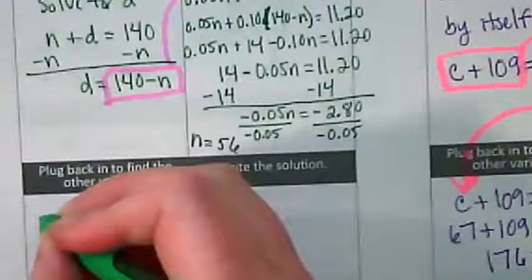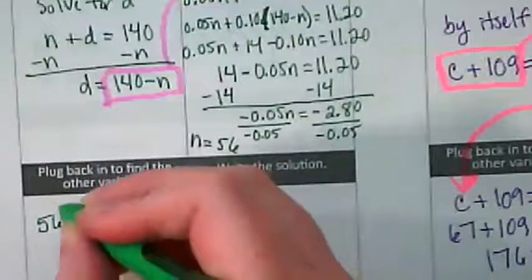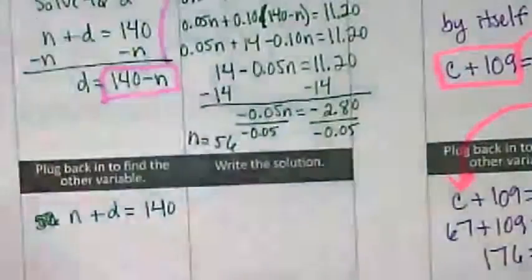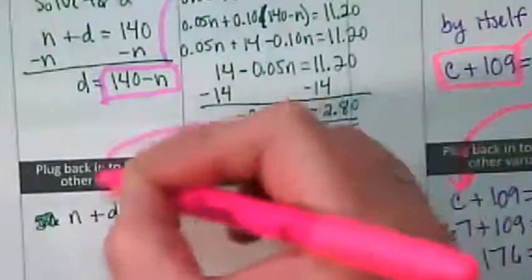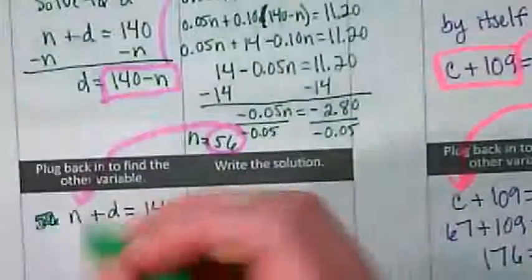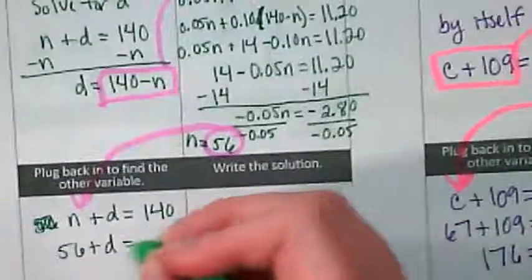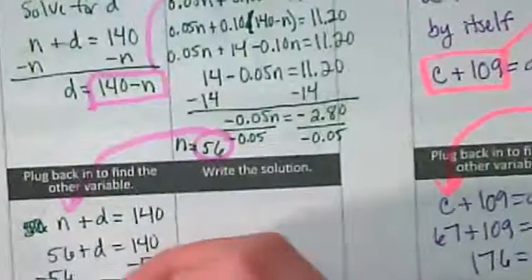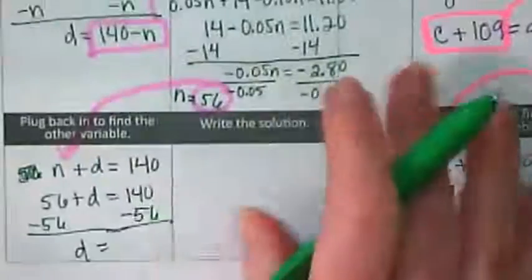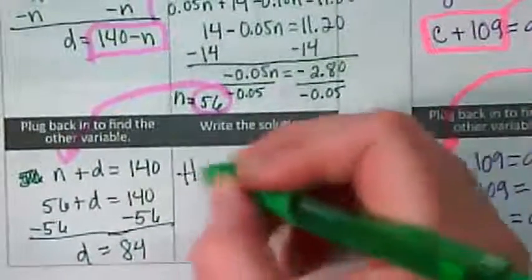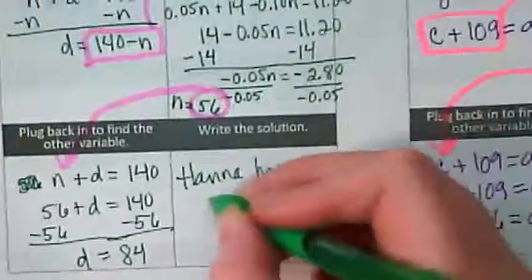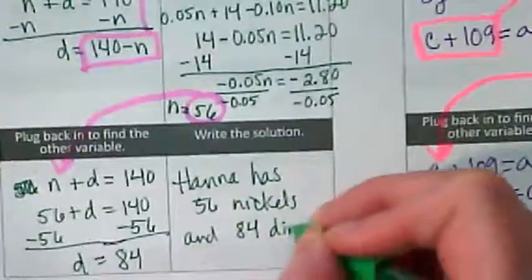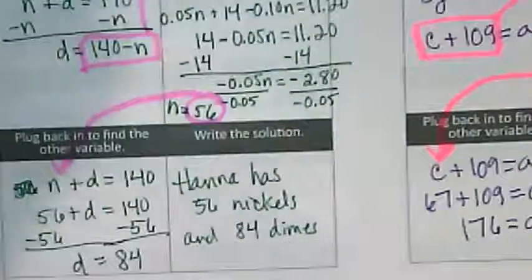Since that's the case, I can go back to that original equation. Let me just write it out: nickels plus dimes equals 140. And I'm going to put this 56 in where the nickels are. And then I'm going to solve for the dimes. And there's our solution.